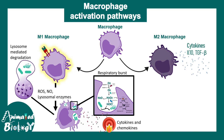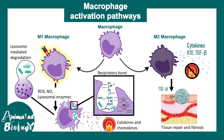Let's talk about M2 macrophages. Their actions are kind of opposite to M1 macrophages. They secrete cytokines that are anti-inflammatory in nature, like IL-10 and TGF-beta. TGF-beta also has the capability of promoting tissue repair and fibrosis. So there are two pathways of macrophage activation: classical and alternative.